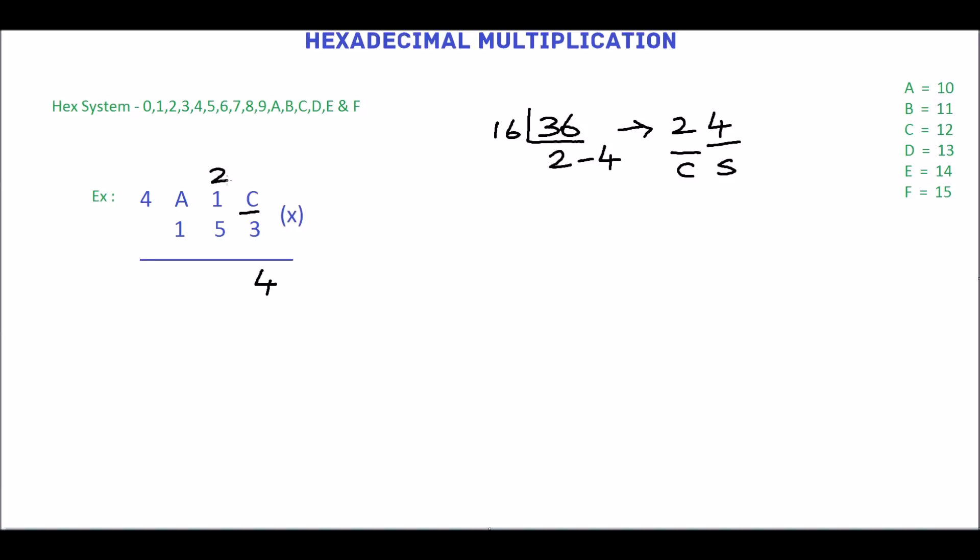Then multiply 3 by 1, which is 3. Then add the carry 2. 3 plus 2 is 5.